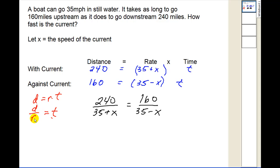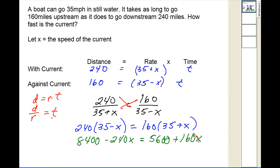Therefore the ratio of distance and rate must be equal. So to solve this, we can perform cross products. So we'd have 240 times 35 minus x must equal 160 times 35 plus x. We'll go ahead and distribute here and solve for x. If we distribute 240, we're going to have 8400 minus 240x is equal to 5600 plus 160x.